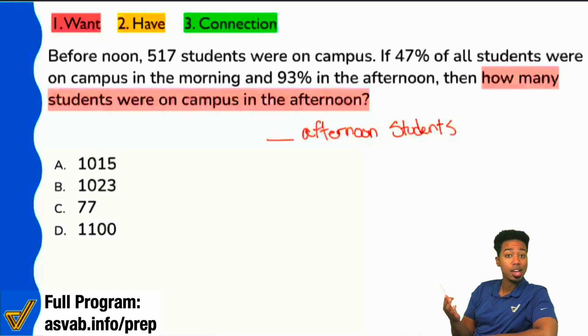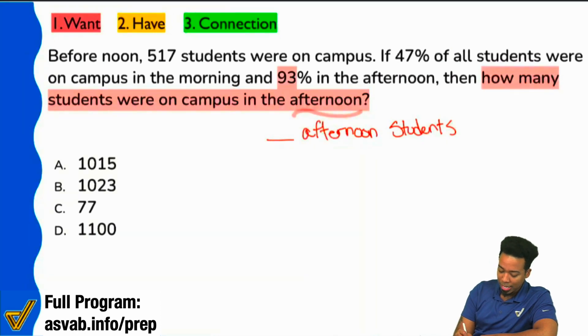Next up, let's see what information we have. Let's see if we can map it out. So over here, before noon, 517 students were on campus. If 47% of all students were on campus in the morning and 93% in the afternoon, then how many students were on campus in the afternoon? So it looks like we have some connected information. We're looking for the students in the afternoon, and I noticed over here 93% of all students were there in the afternoon.